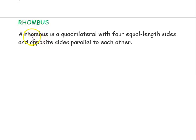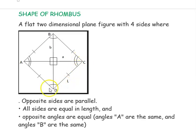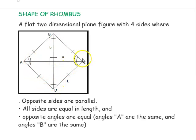Next is the rhombus. A rhombus is a quadrilateral with four equal-length sides and opposite sides parallel to each other. It is a flat two-dimensional plane figure with four sides. Side AB is parallel to side CD and side AD is parallel to side CB. All four side lengths are equal, and opposite angles are equal — the angle at B equals angle at D, and angle at A equals angle at C.